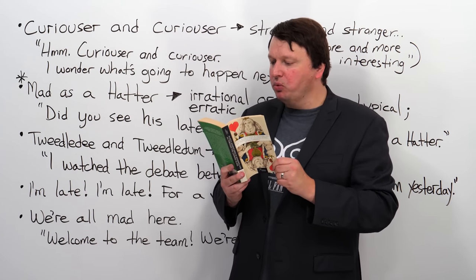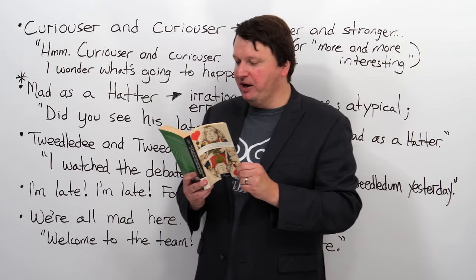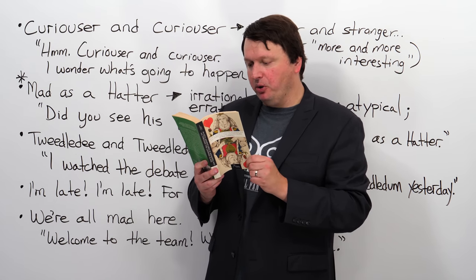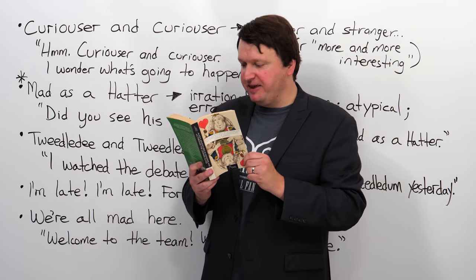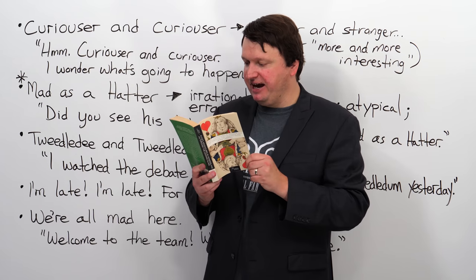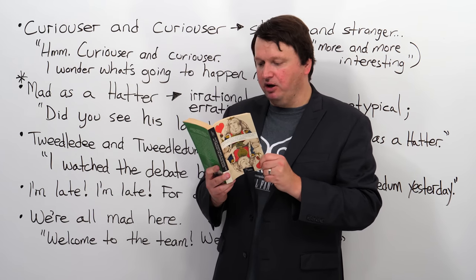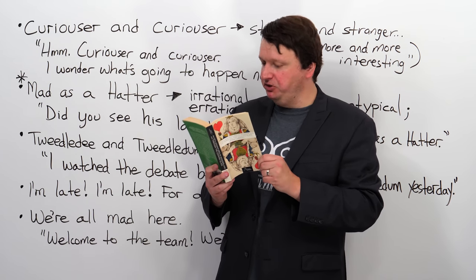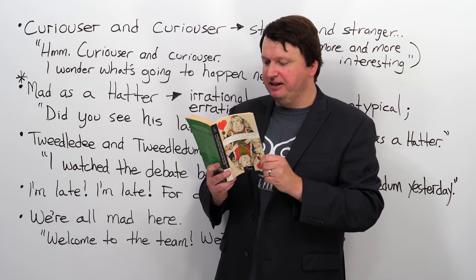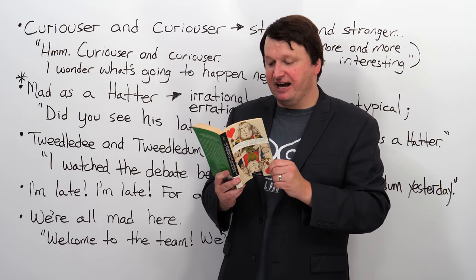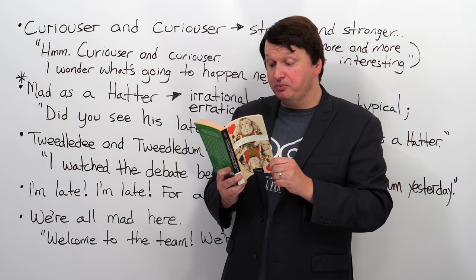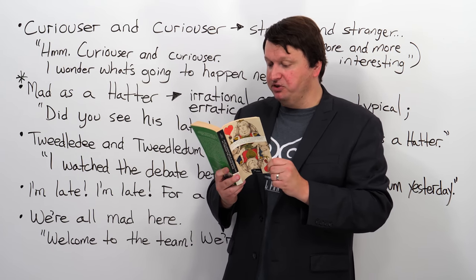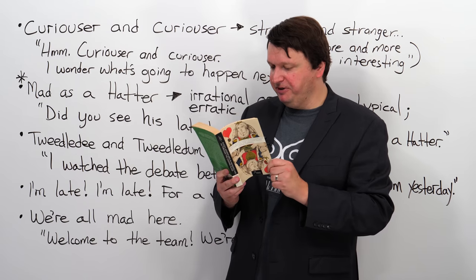But I don't want to go among mad people, Alice remarked. Oh, you can't help that, said the cat. We're all mad here. I'm mad, you're mad. How do you know I'm mad, said Alice. You must be, said the cat, or you wouldn't have come here.